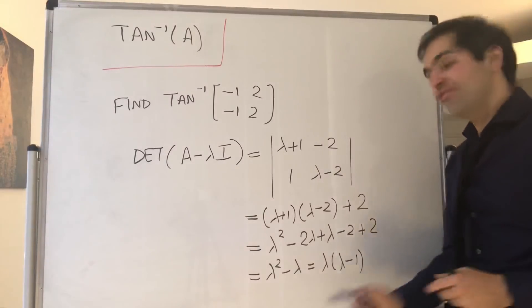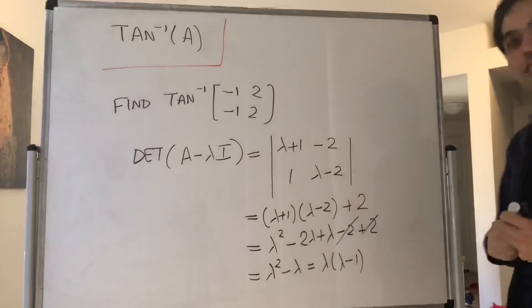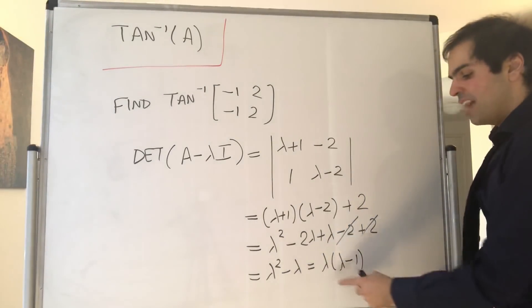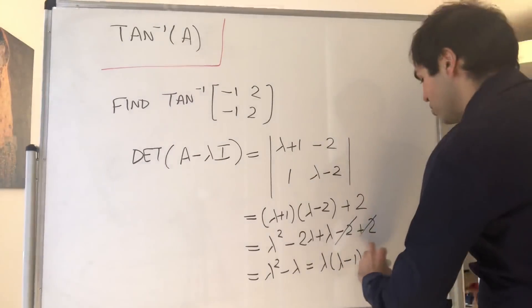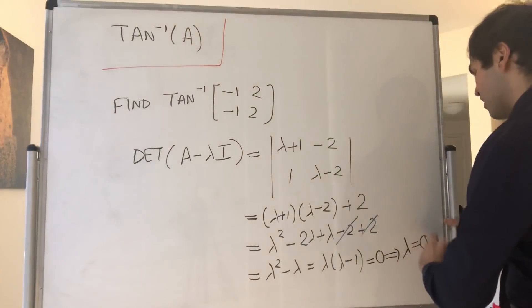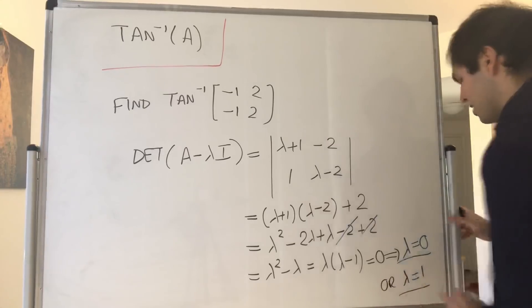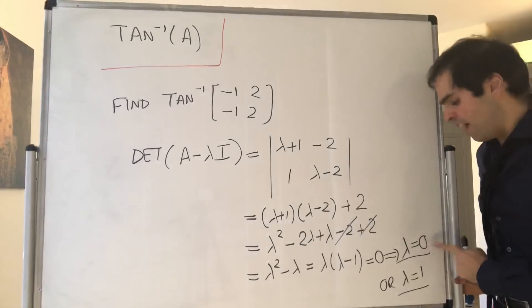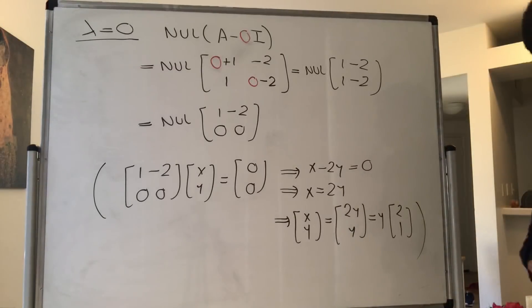And notice something beautiful here: the minus 2 cancels out with the 2. So we're left with something very easy, namely lambda squared minus lambda equals lambda times (lambda minus 1). You set that equal to 0, and then ultimately you get either lambda is 0 or lambda equals 1. And the point is now to find the eigenvectors for each eigenvalue - find the corresponding null spaces.